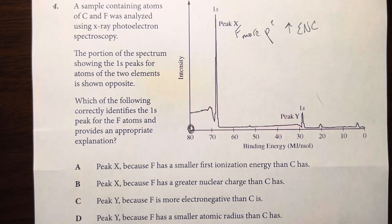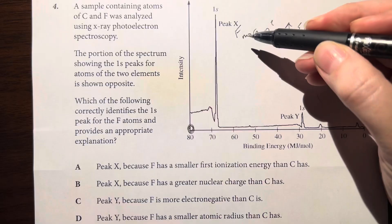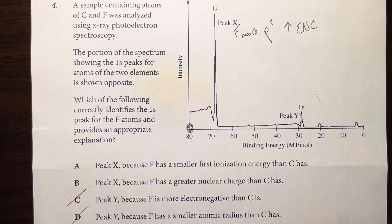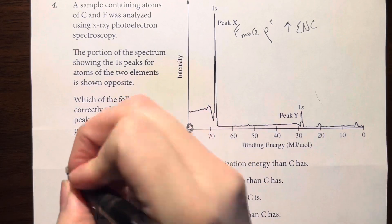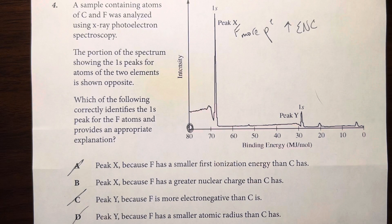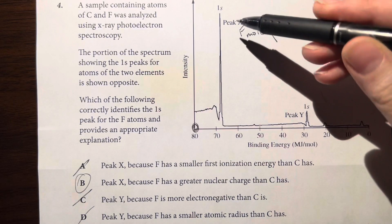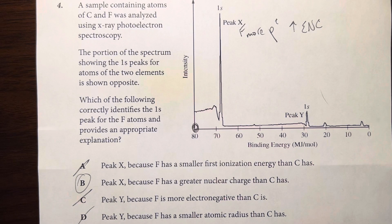Looking at the answer choices: we've identified peak x as fluorine, so we can eliminate options C and D which identify peak y as fluorine. Between A and B: option A says peak x because fluorine has a smaller first ionization energy than carbon — that is not true. It is much harder to remove electrons from fluorine than carbon due to its higher effective nuclear charge. Option B says peak x because fluorine has a greater effective nuclear charge than carbon — that is our answer, matching our predicted reasoning.